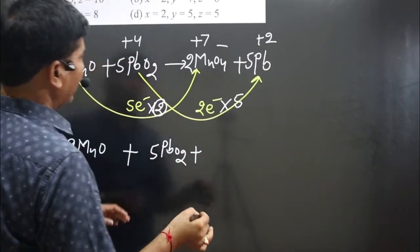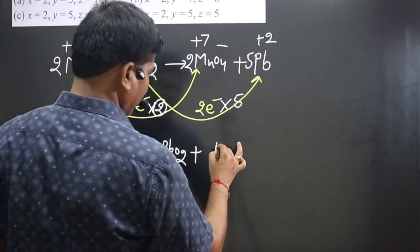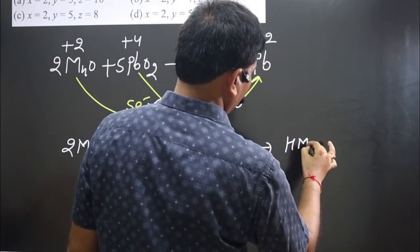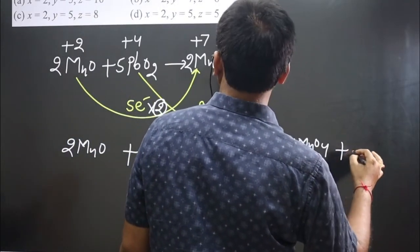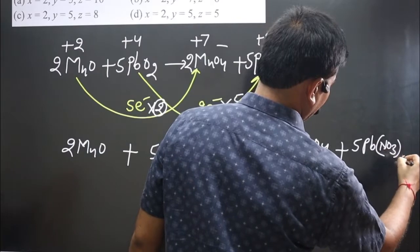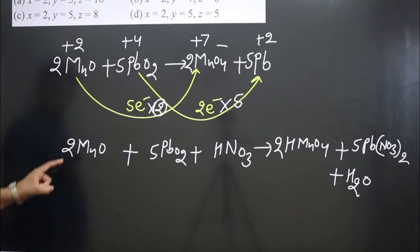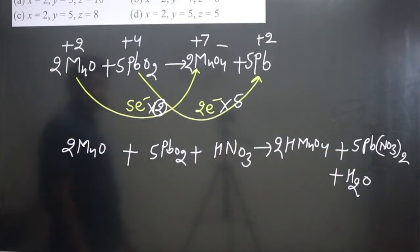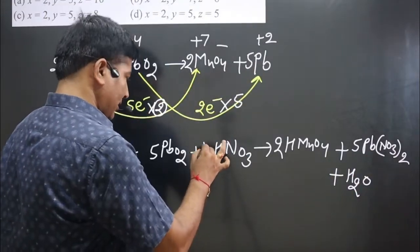The overall equation gives us 2 MnO + 5 PbO2. Now we include the spectator ions. On the left side we add HNO3 (nitric acid); on the right side we have 2 HMnO4 and five lead nitrate molecules — Pb(NO3)2 — and water. Manganese is balanced, lead is balanced.